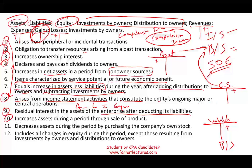Number ten: increases assets during the period through the sale of a product. When we sell a product, what is that? That's revenue — that's the definition of revenue.